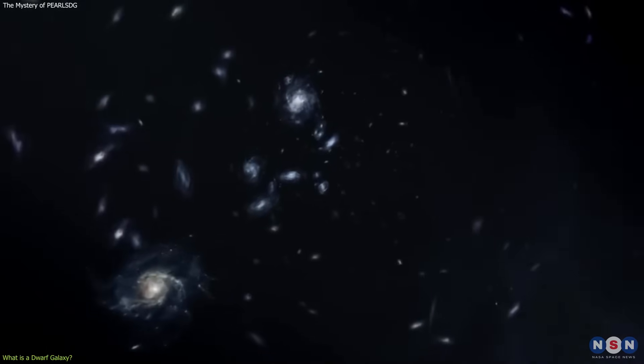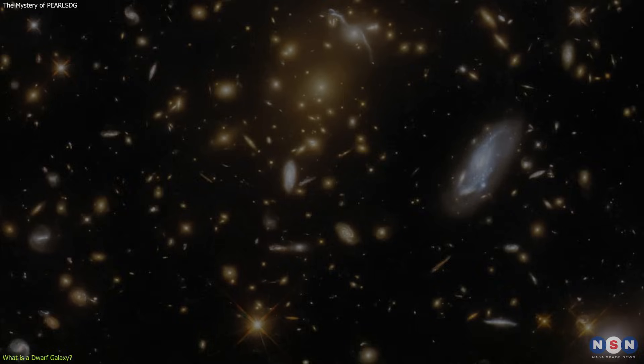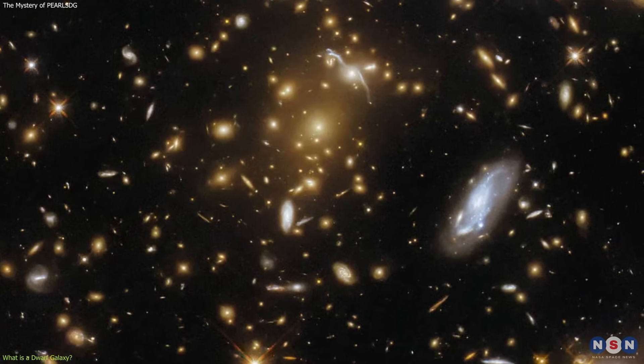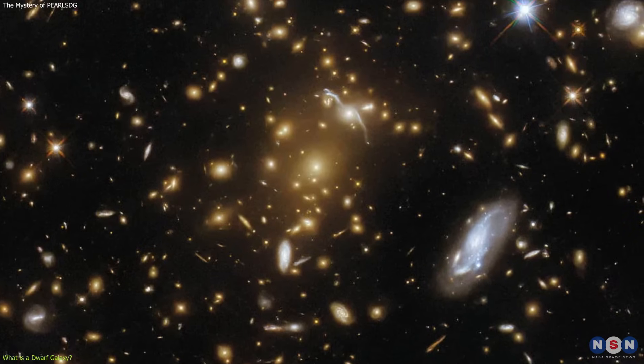These type of galaxies are very common in the universe, and they are usually found in groups or clusters, orbiting around larger galaxies as satellites.